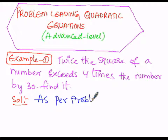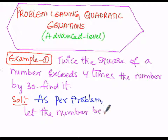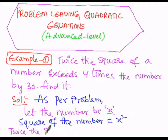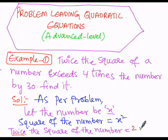As per the problem, let the number be x. Then the square of the number is x². Twice the square of the number means 2 times x², which equals 2x².